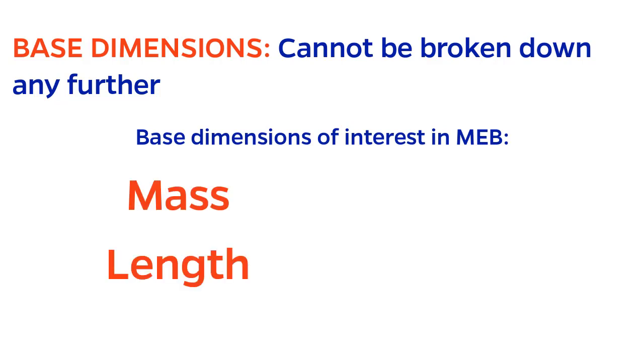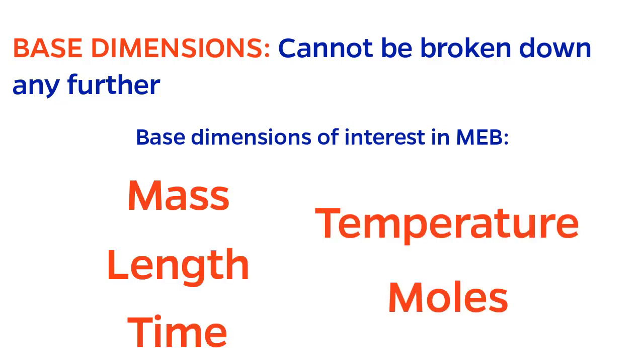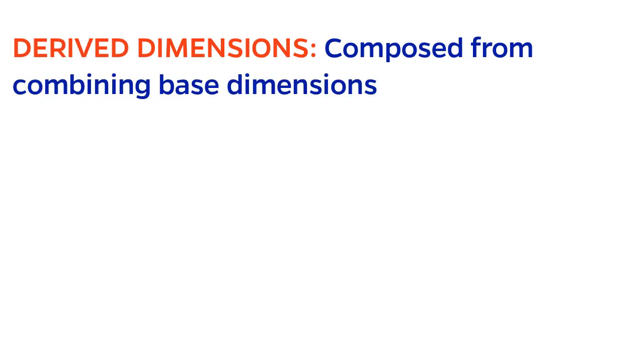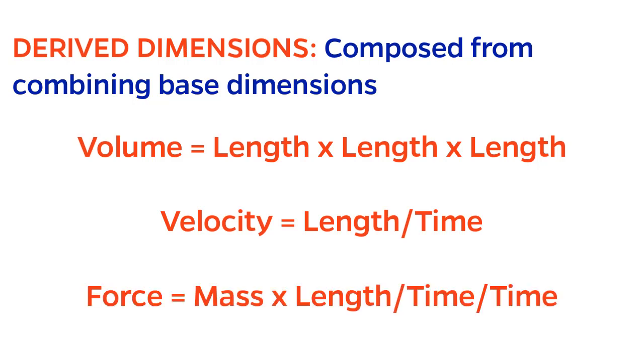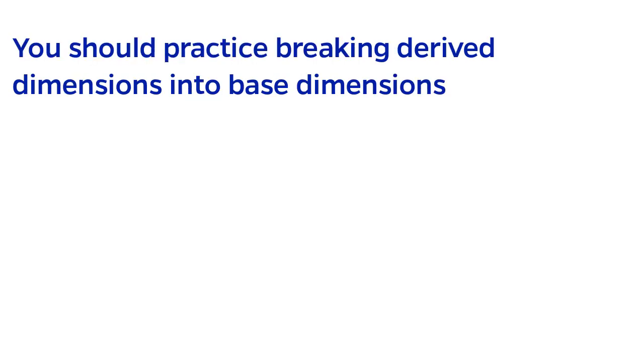Mass, length, time, temperature, and moles. Derived dimensions come about by combining the base dimensions. For example, volume is length cubed. Velocity is length divided by time. Force is mass times length divided by time squared. I highly recommend becoming proficient in breaking derived dimensions into base dimensions if you aren't already.